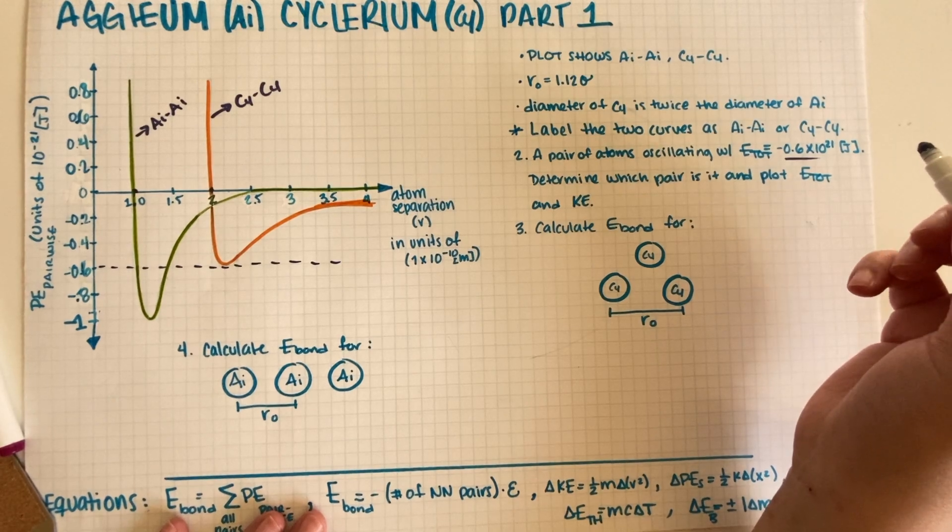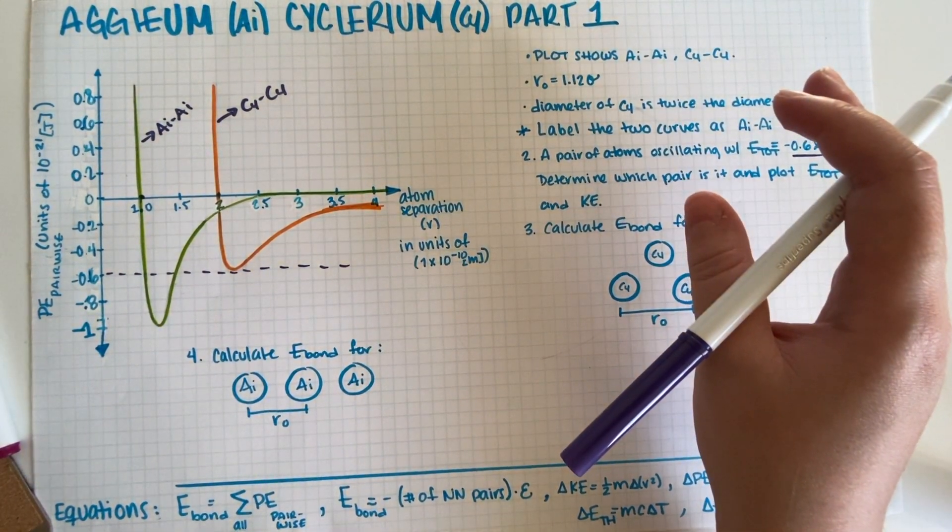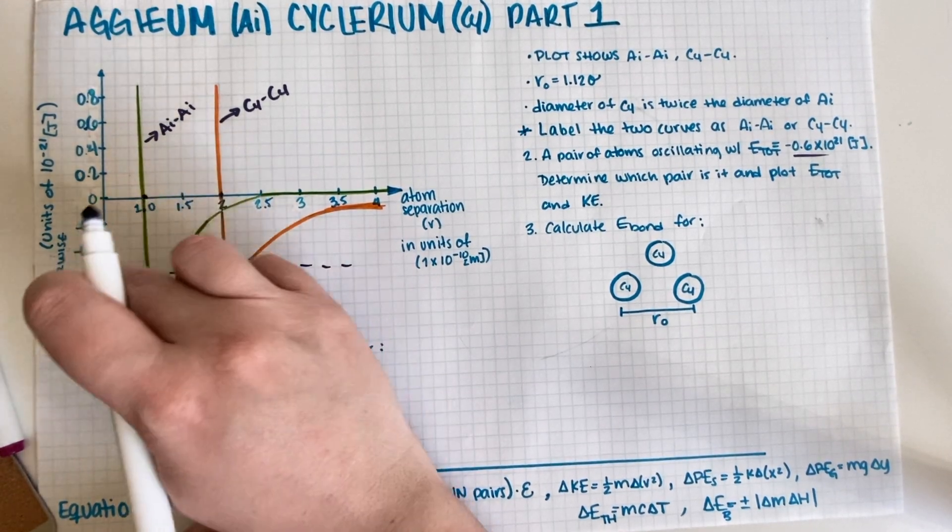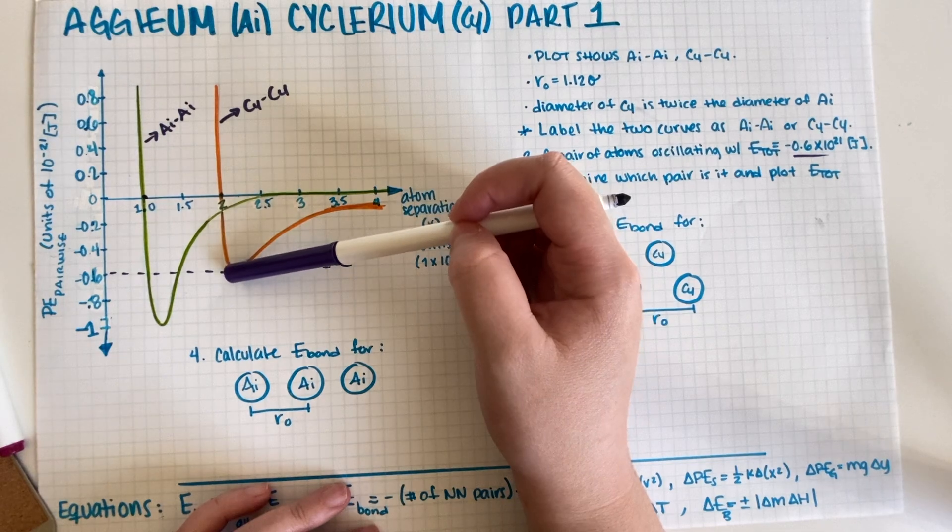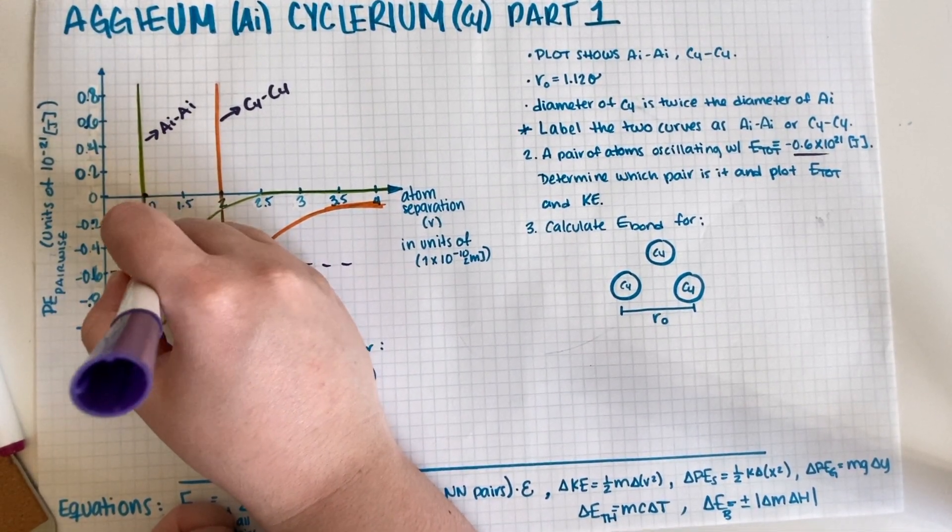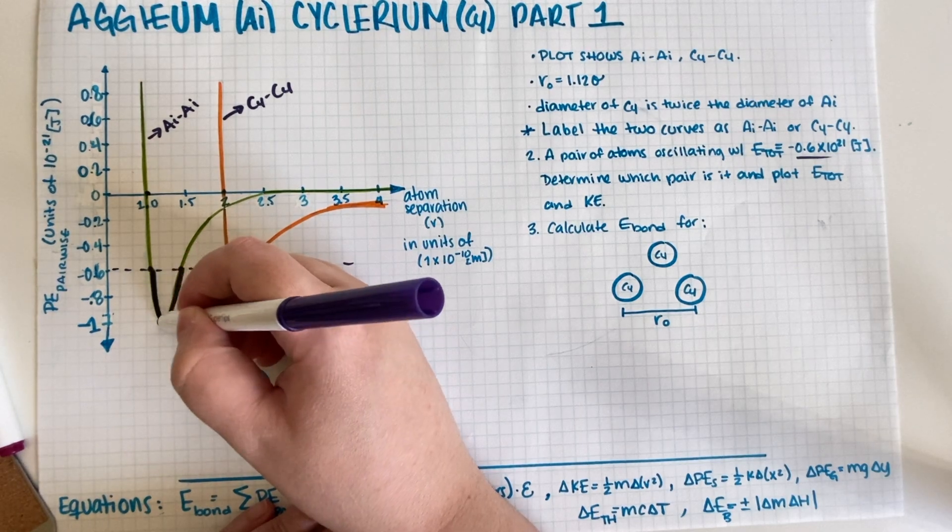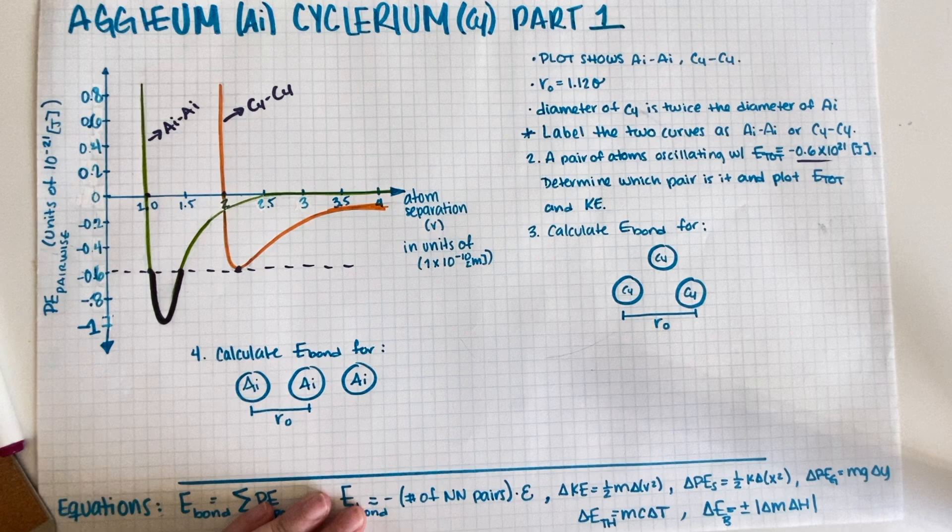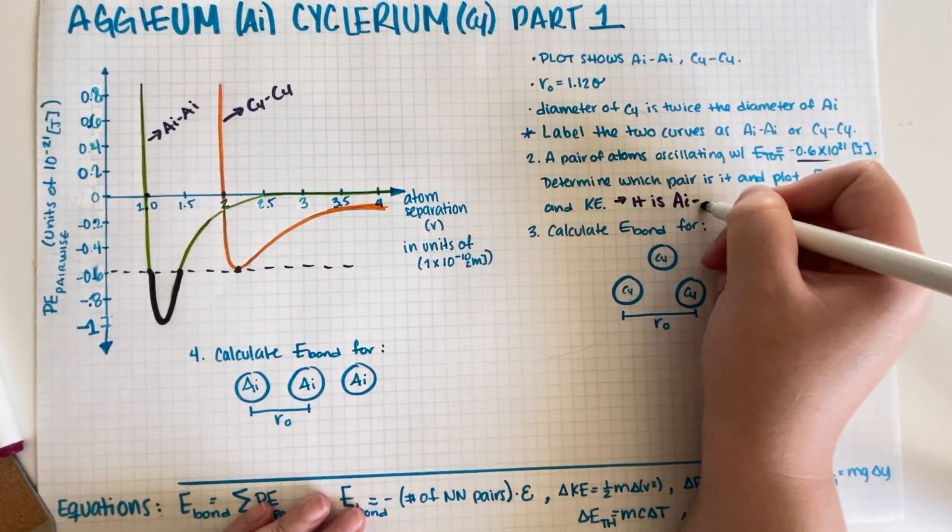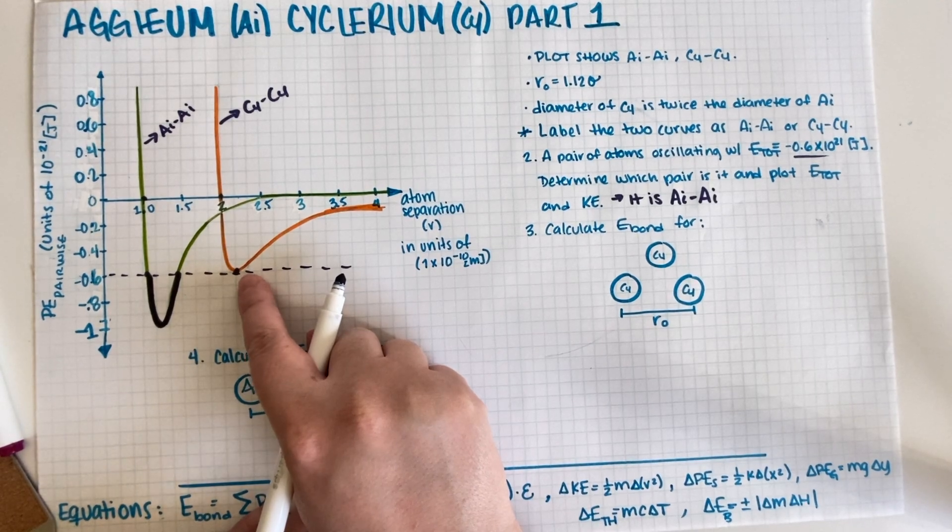Determine which pair and plot E_total and kinetic energy. Determining which pair is kind of easy because it can't be the Cyclerium - the Cyclerium only touches -0.6 on one spot, so if it were the Cyclerium both of them would be at rest instead of oscillating. Whereas the Aegeum, we have it on this range, which means that it is the Aegeum because it's oscillating between these two values. So it is definitely Aegeum because the Cyclerium would be at rest, not oscillating.